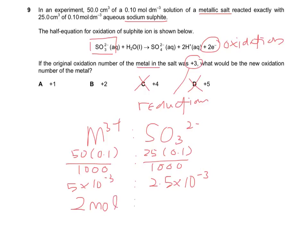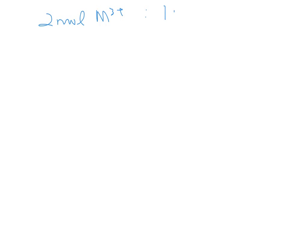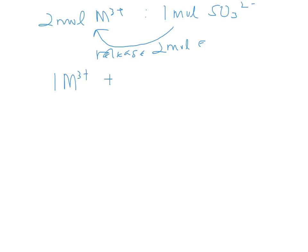So the ratio shows that 2 mols of M³⁺ react with 1 mol of SO₃²⁻. For 1 mol of SO₃²⁻, it will release 2 mols of electrons. Therefore, 1 mol of M³⁺ will gain 1 mol of electrons.